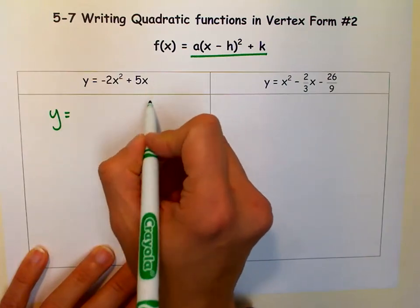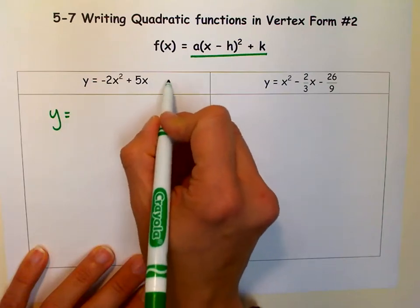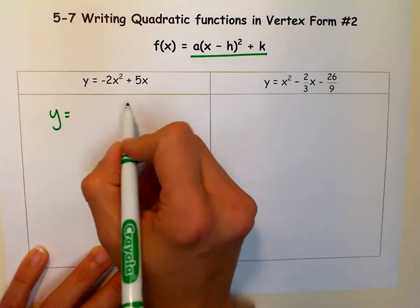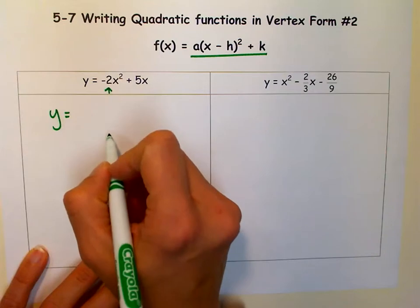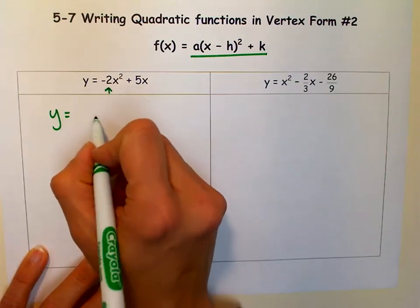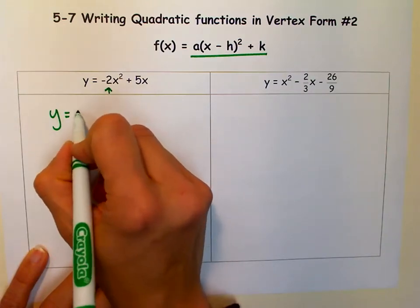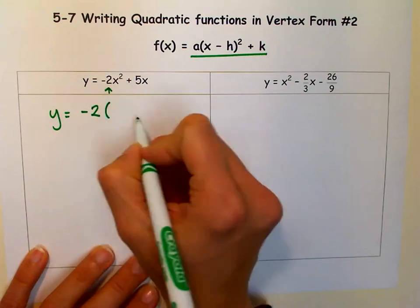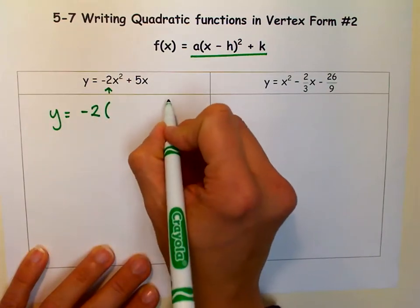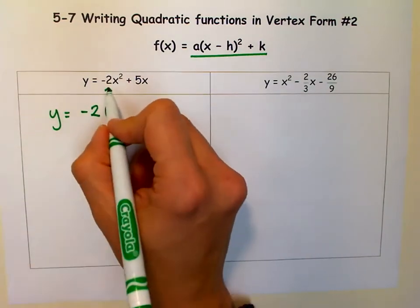The first thing we would do is make sure that c is kind of moved away a little bit, but notice we don't have a c here. The next thing we would do is make sure our a is 1. But instead of dividing like you did when you solved by completing the square, we're factoring out that coefficient a.